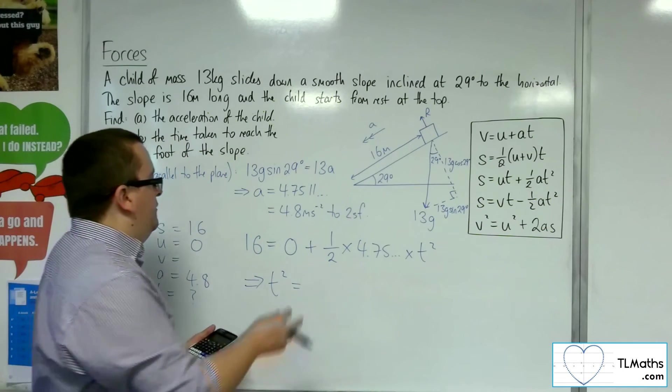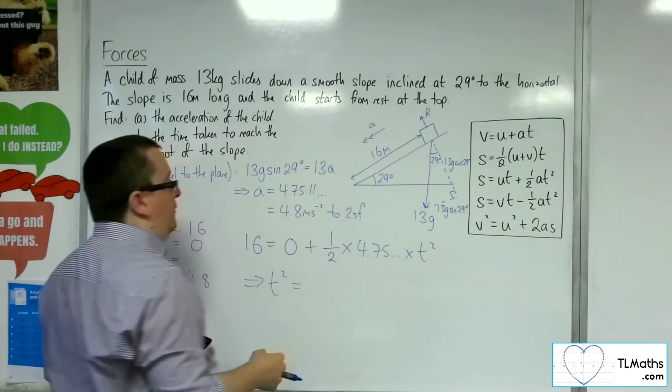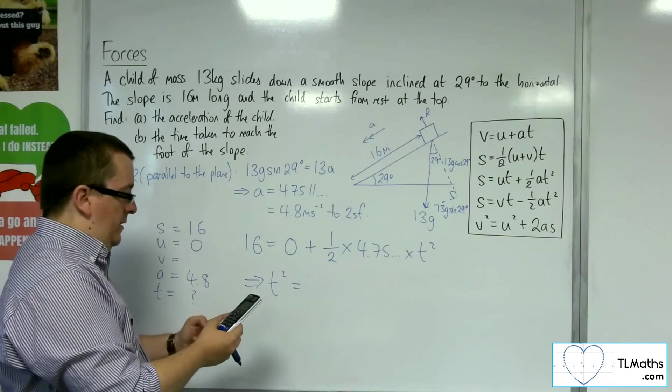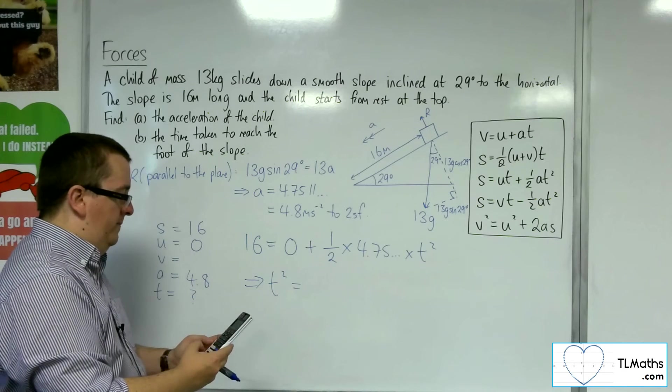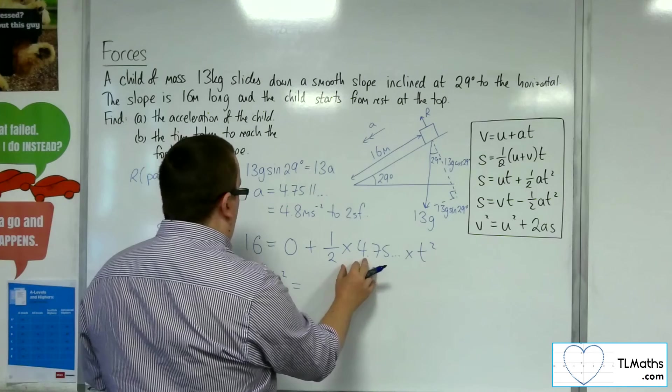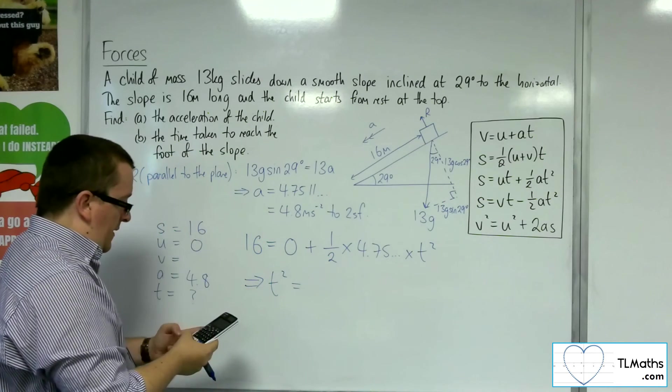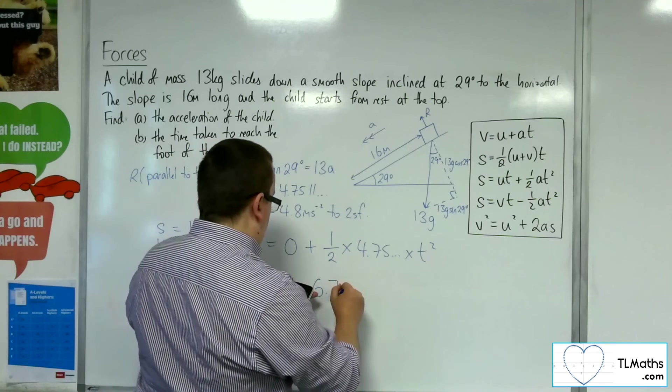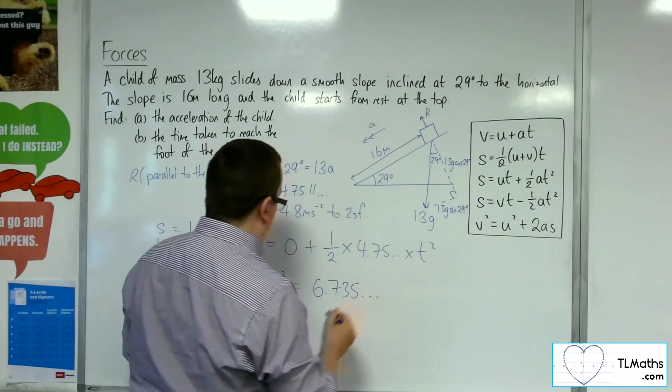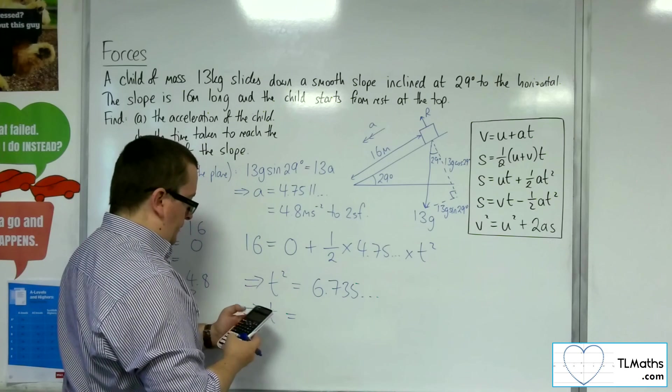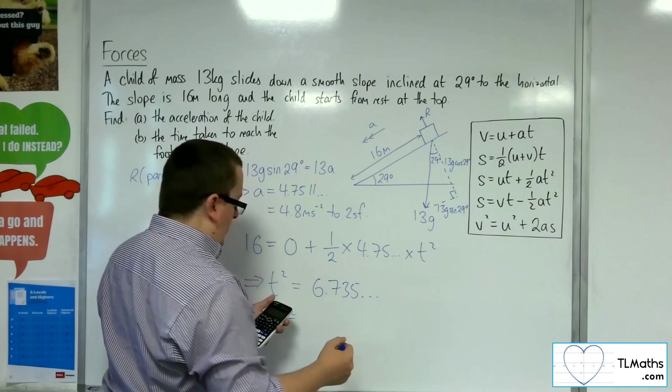So if I divide both sides by the half 4.75, etc., so if I halve what I've got in my calculator, so that's 2.3755, so that's that bit. I'm going to divide 16 by that, so 16 divided by the answer, and that gets me 6.735, etc.